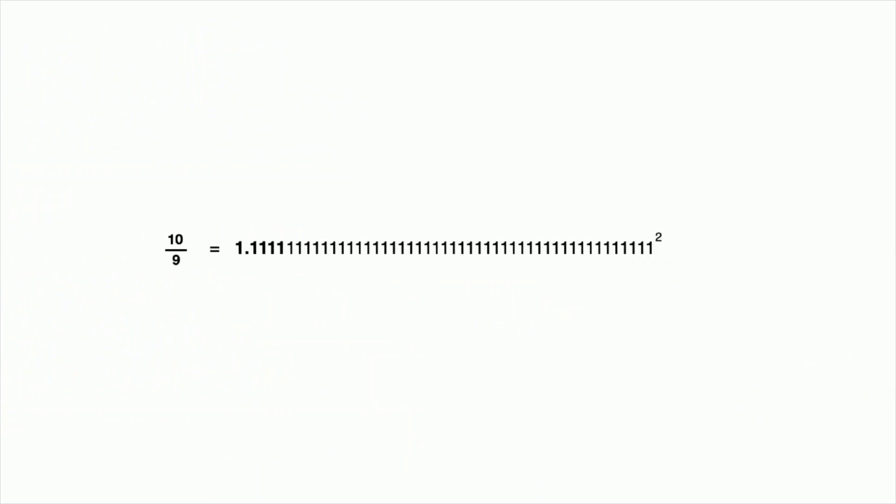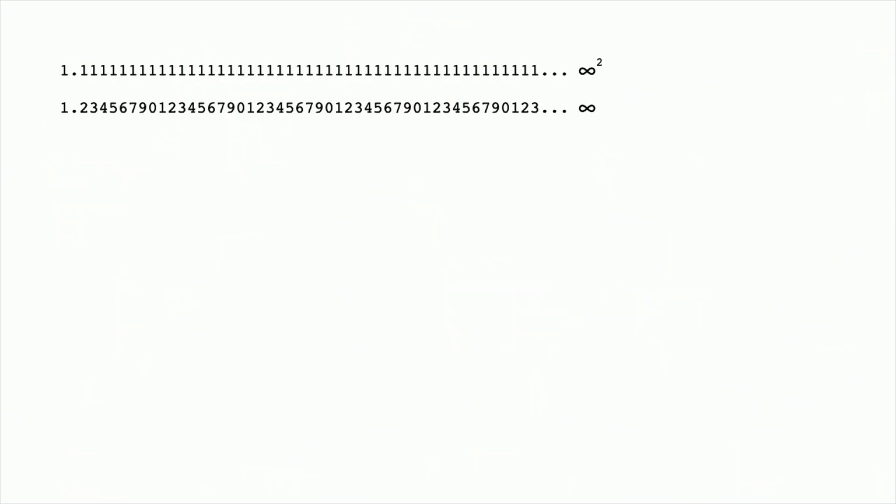I took it further. If you square that number—if you square 1.111111 out to infinity—you end up with this number: 1234567901234567... so 8 is missing over and over. Peter Plictor in Germany had done a similar experiment mathematically with this ratio of 1 over 81. He found the same thing and said, what if those 8s should be there and it really should be 123456789(10)(11)(12).